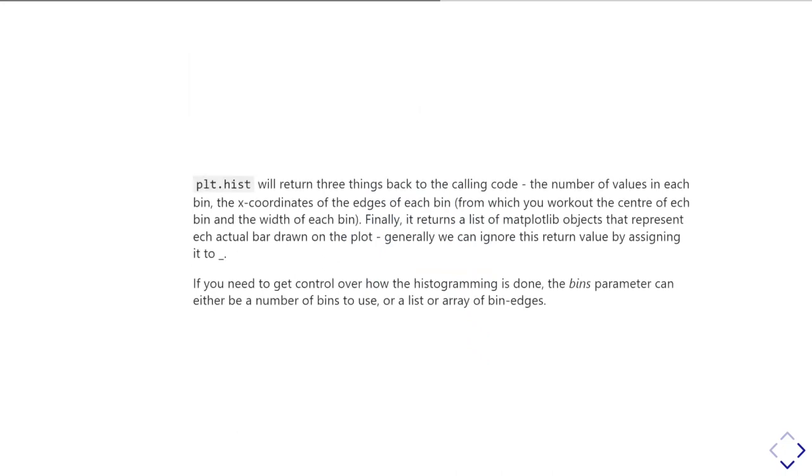plot.hist actually returns you back three bits of information when you call it. You get the number of values that are in each bin and each bar. You also get the x-coordinates of the edges of each bin of each bar. So if you have 10 bars, then you'll get 10 numbers back in the first parameter, and you'll get 11 numbers back in the second parameter because it's giving you the left and right edges. The left edge of the second bin is the same thing as the right edge of the first bin. So if you have n bins, you need n plus one edges.